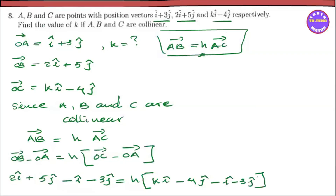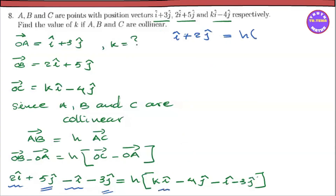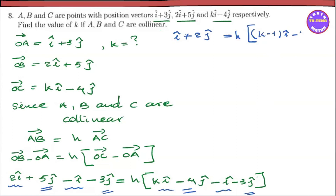So I-cap plus 2g-cap equals H into (K-1) I-cap minus 7H g-cap. Comparing coefficients: from the I-cap component, 1 equals H(K-1), and from the g-cap component, 2 equals minus 7H.